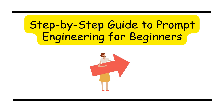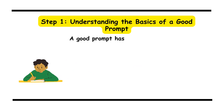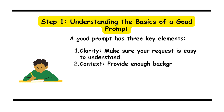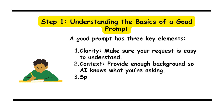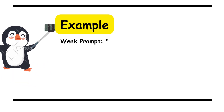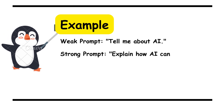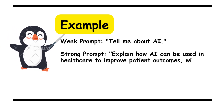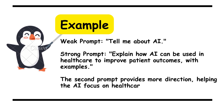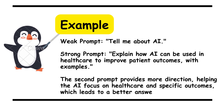Step-by-step guide to prompt engineering for beginners. Step 1: understanding the basics of a good prompt. A good prompt has three key elements — clarity: make sure your request is easy to understand; context: provide enough background so AI knows what you're asking; specificity: clearly state what you want from the AI, whether it's information, advice, or creativity. For example, a weak prompt would be 'Tell me about AI,' while a strong prompt would be 'Explain how AI can be used in healthcare to improve patient outcomes, with examples.' The second prompt provides more direction, helping the AI focus on healthcare and specific outcomes, which leads to a better answer.